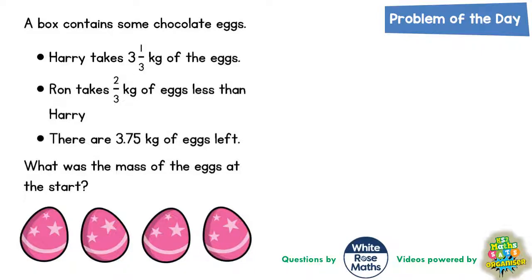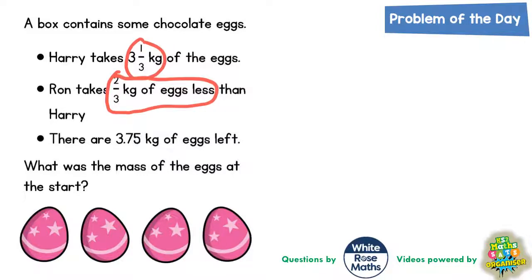Welcome, problem-solving fans, to another problem of the day. This one is all about chocolate eggs. Harry takes three and a third kilograms of the eggs, but Ron takes two thirds of a kilogram less than that. Before we go any further, it's probably a good idea to figure out what that actually is worth.